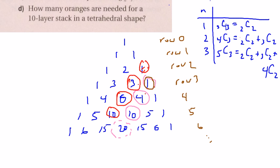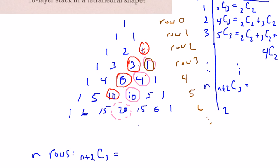Extending this pattern, you eventually get to number n, which is going to be two more than n. So n plus 2 choose 3 is going to equal the sum of all terms starting from 2 choose 2. So if there are n rows to our pyramidal tetrahedron, we're finding the number in row n plus 2 of Pascal's triangle, term three. That sum is 2 choose 2 plus 3 choose 2, continuing up to n plus 1 choose 2.